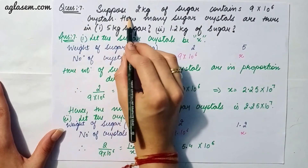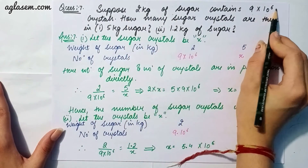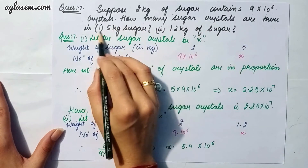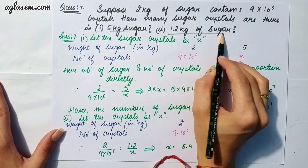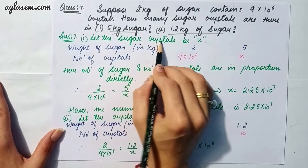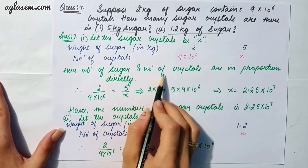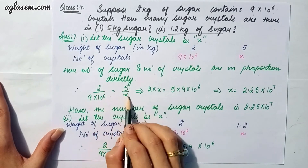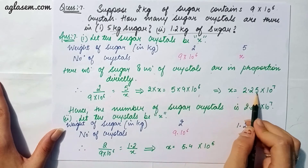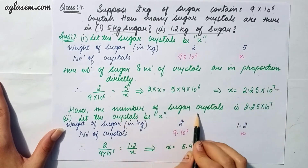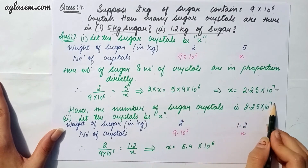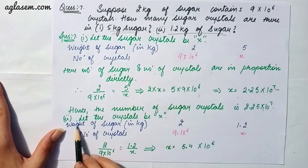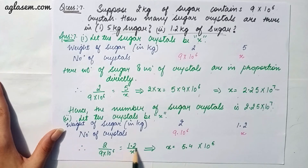Question 7: Suppose 2 kg of sugar contains 9×10⁶ crystals. How many sugar crystals are there in 5 kg and 1.2 kg of sugar? For 5 kg: let crystals be x. Sugar and crystals are directly proportionate, so 2/(9×10⁶) = 5/x, giving x = 2.25×10⁷ crystals. For 1.2 kg: let crystals be x. Equation gives 2/(9×10⁶) = 1.2/x, so x = 5.4×10⁶ crystals.